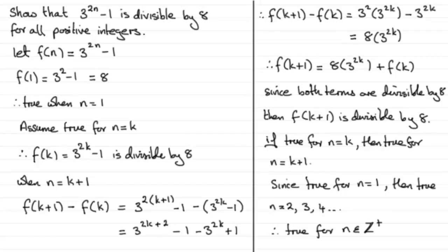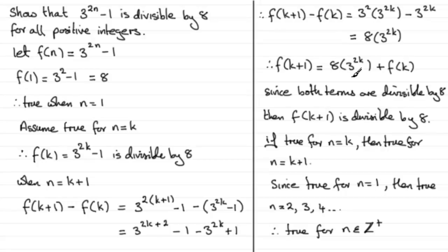I hope that's given you an idea of how we can approach questions where we've got to show that expressions are divisible by or multiples of a particular number. We always go down to the idea of looking at f(k+1) minus f(k), work it out, then add f(k) to both sides and investigate what you've got — in this case, each term being divisible by 8.